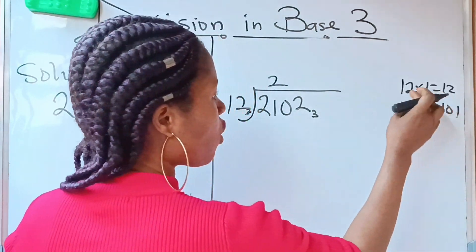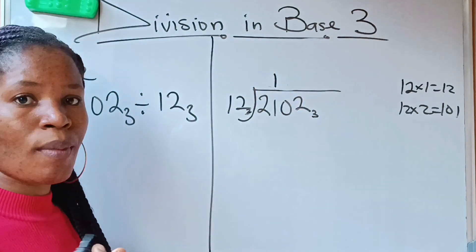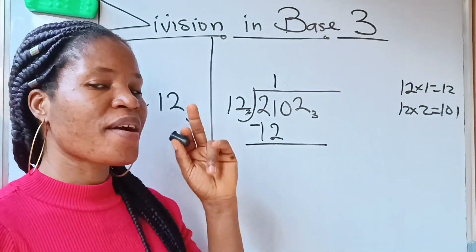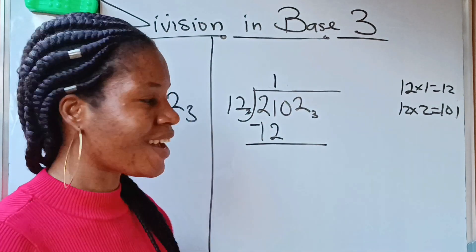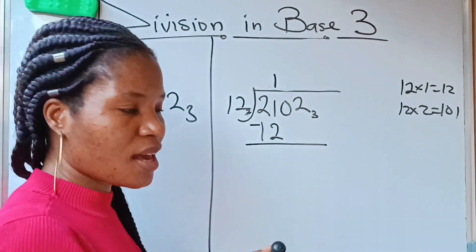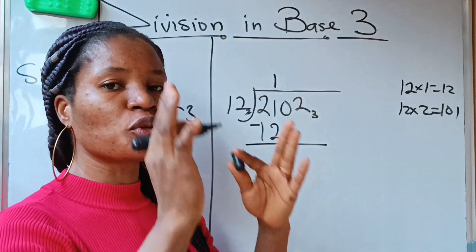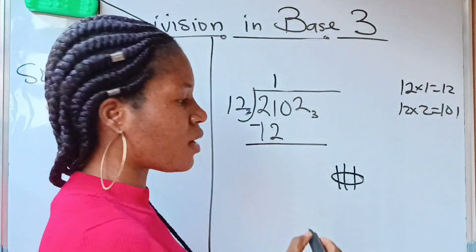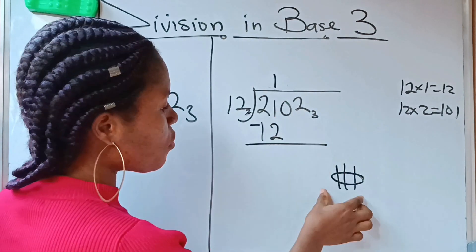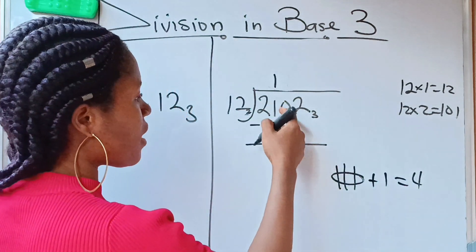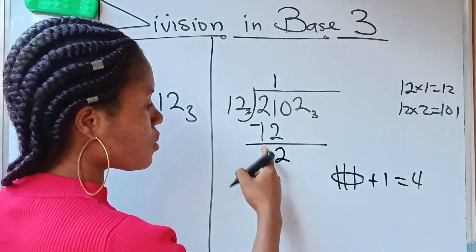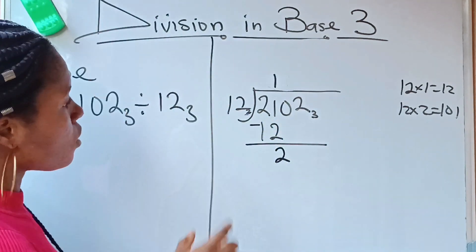So we write 1 in the quotient. 1 times 12 is 12. Now we subtract in base 3: 1 minus 2 is not possible, so we borrow one from the 2, but that borrowed bundle is a bundle of three since we are in base 3. So we add 3 to this 1, giving 4. Then 4 minus 2 is 2, and 1 minus 1 is 0.